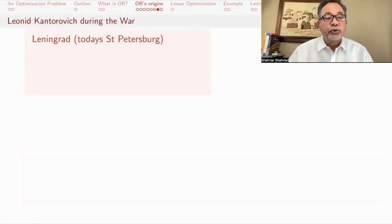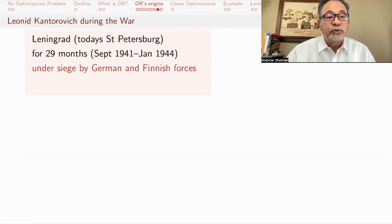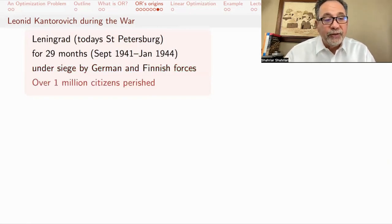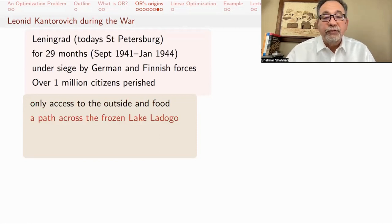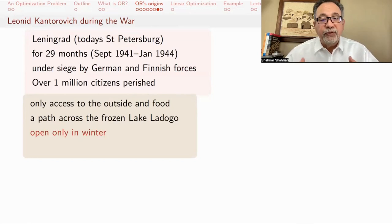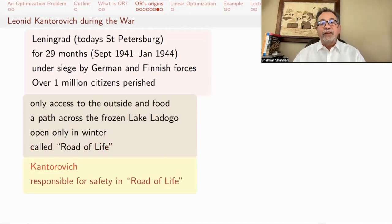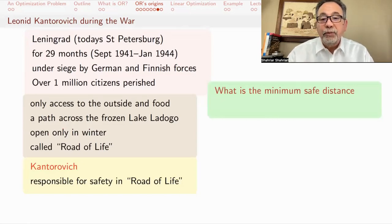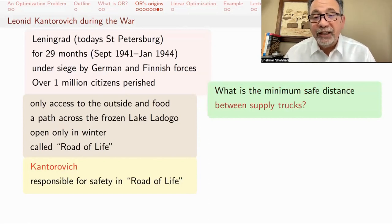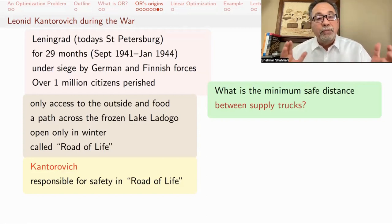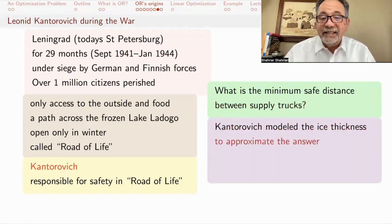I want to tell you a little bit about Kantorovich. During the war, Leningrad, which is today St. Petersburg, was under siege for 29 months by the German and Finnish forces. This was known as the Siege of Leningrad. Over one million citizens of Leningrad perished during this siege. The only access to the outside and food was through a path across the frozen lake Ladoga. This road was called the Road of Life. Kantorovich was responsible for safety in the Road of Life. The question that he had to answer was, what's the minimum safe distance between supply trucks? If you had the trucks going across on the frozen lake too close to each other, that would be too much weight and the ice would break. On the other hand, if you put too much space between them, you couldn't get as much supply as you wanted. Kantorovich modeled the ice thickness to approximate the answer. The story is told that he would go on the lake personally and walk between the cars to make sure that they didn't sink.